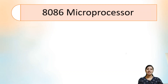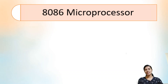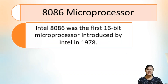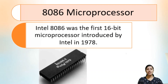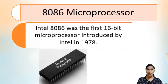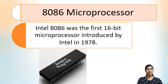Hi all. In this video segment we look into the 8086 microprocessor and the register organization of this microprocessor. The 8086 microprocessor was the first 16-bit microprocessor introduced by Intel. A 16-bit microprocessor is capable of doing operations on 16-bit data. Before 16-bit microprocessors, there were 4-bit microprocessors and 8-bit microprocessors.